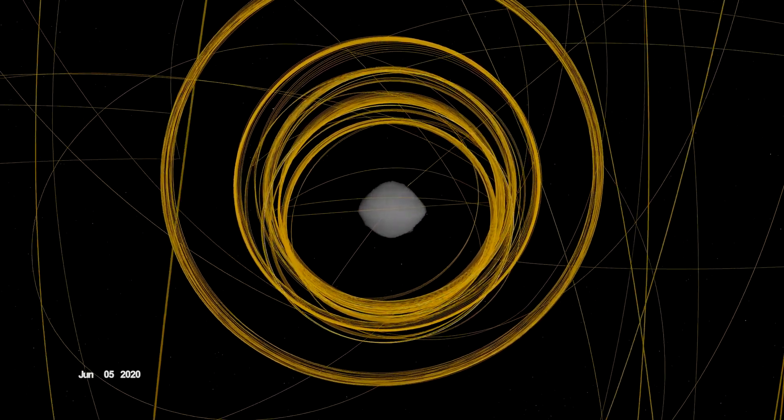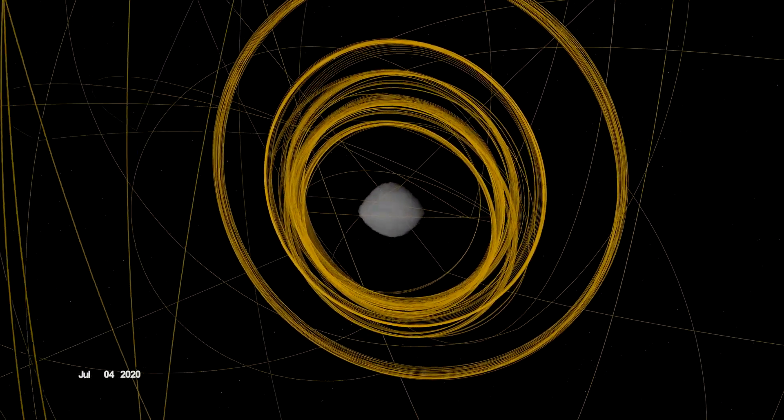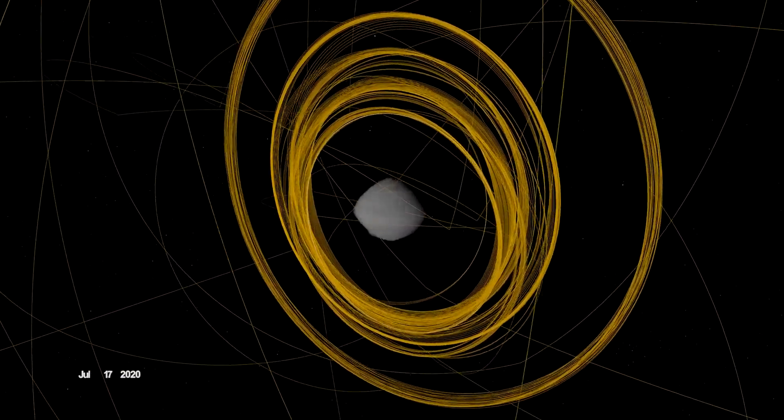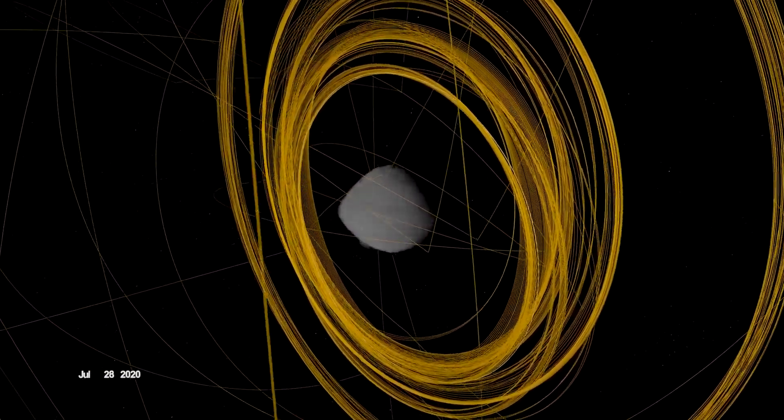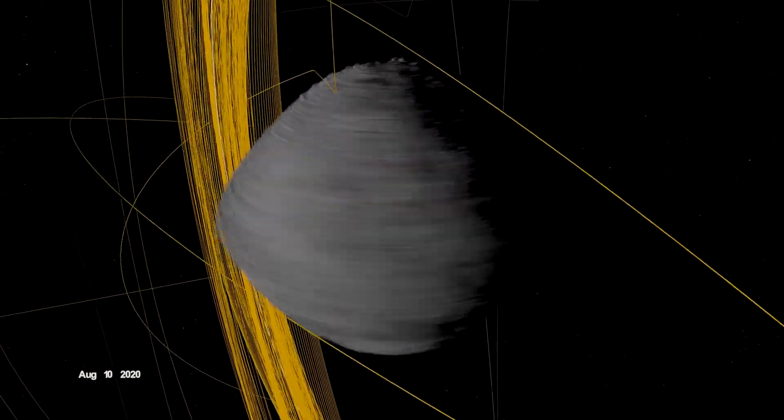After the checkpoint rehearsal, OSIRIS-REx flew one final reconnaissance sortie over site Osprey. Then it made a series of high-altitude maneuvers while rebooting its onboard processor and preparing for its second rehearsal of the sample collection event.